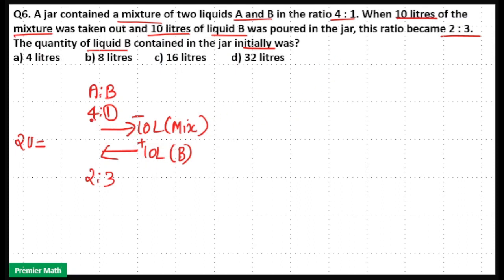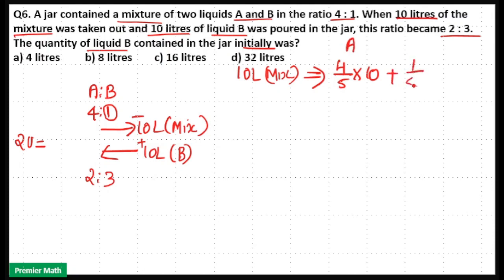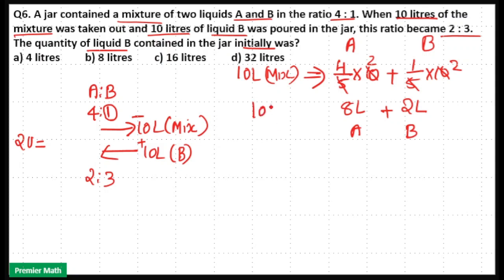You need to find the exact difference. In 10 liters of mixture, taken from a 4 is to 1 ratio, 4 parts out of 5 is liquid A and 1 part out of 5 is liquid B. So in 10 liters: 4 by 5 into 10 equals 8 liters of liquid A, and 1 by 5 into 10 equals 2 liters of liquid B. So in the 10 liters of mixture, 8 liters is liquid A and 2 liters is liquid B.